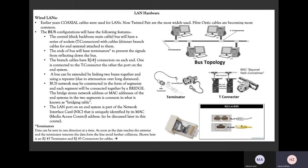As discussed in detail before, a local area network is a network that is limited to within one building, one room, or one office. So if you revert back to our banking system example, the network used within one branch is a good example of what a local area network is.